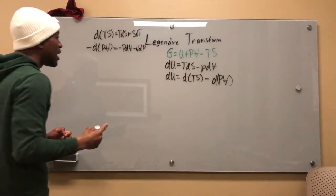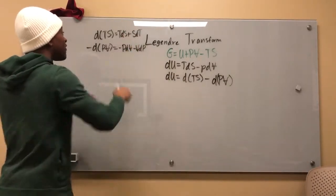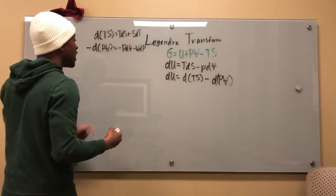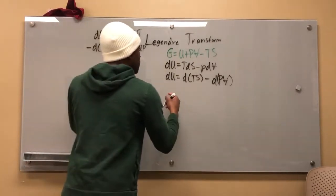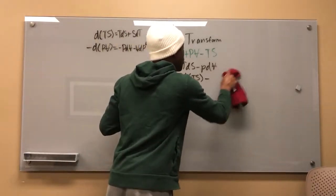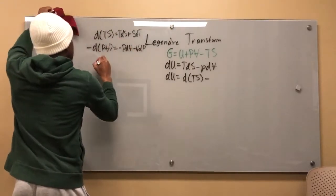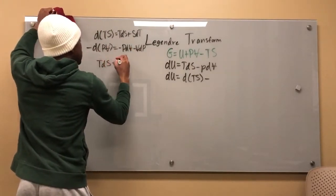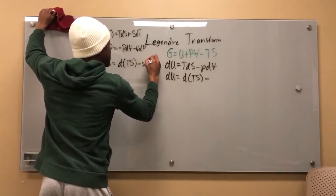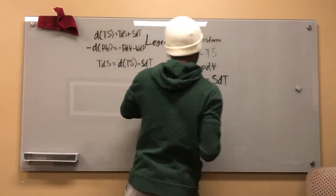Cool. Now, I have a negative PDV term there and I have a TDS term here. So I'm just going to subtract this here. So TDS is equal to DTS minus SDT. So I'm going to go ahead and write that here minus SDT, okay?